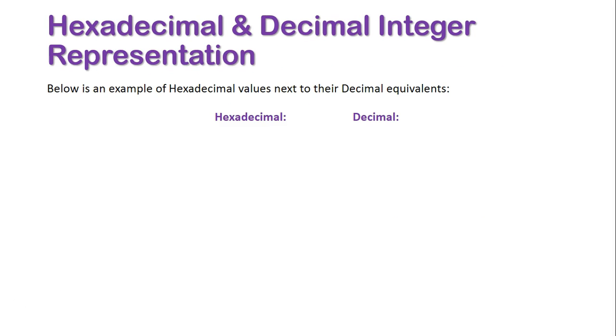And just finally, we'll have a look at equivalent values between hexadecimal and decimal. So 1 in hexadecimal equals 1 in decimal. 10 in hexadecimal, though, equals 16 in decimal, because 1 in the second column is equal to 16, and 0 doesn't activate the 1 column, so that's why it equals 16.